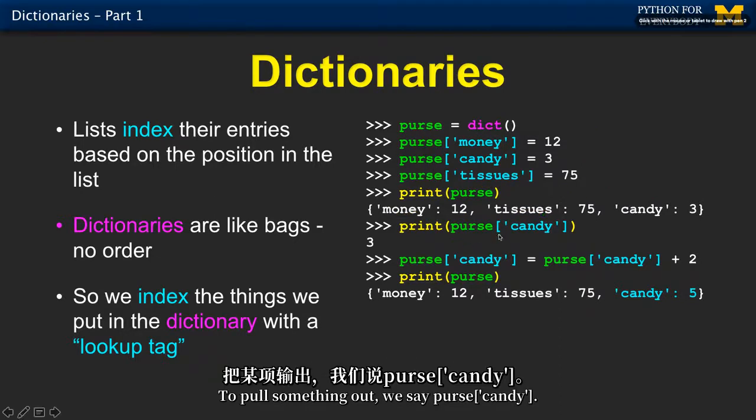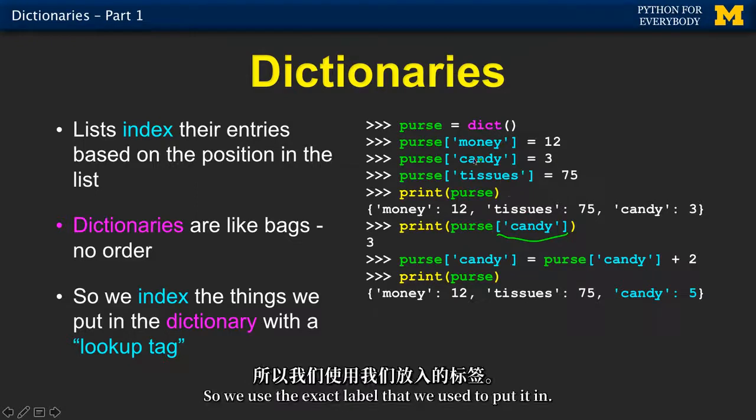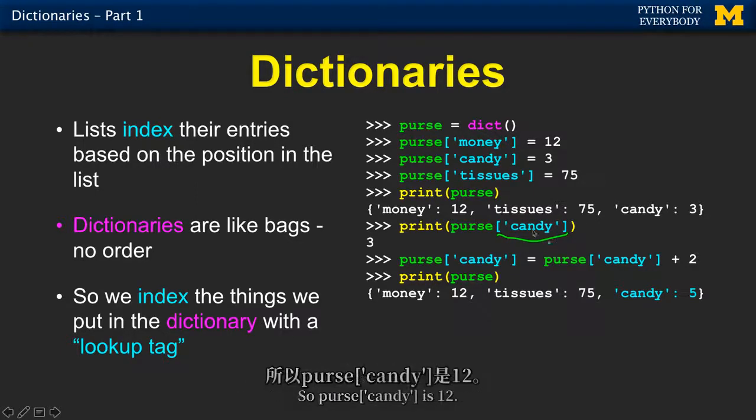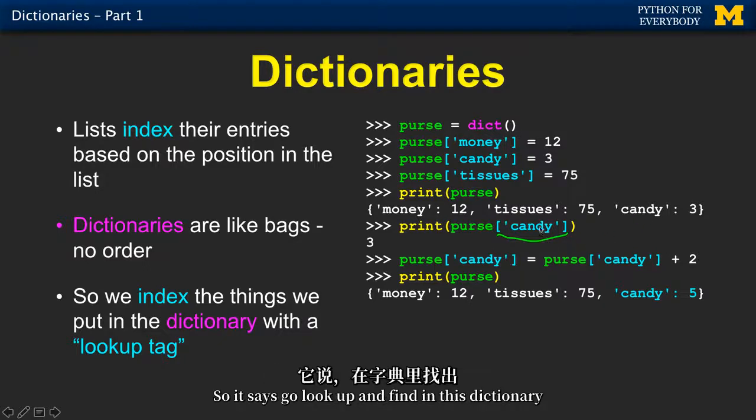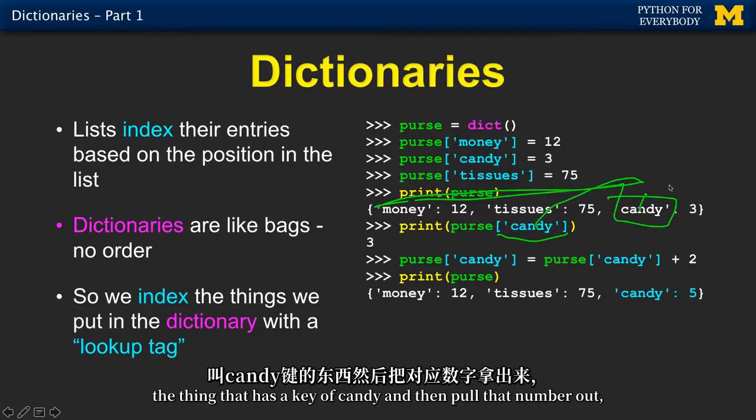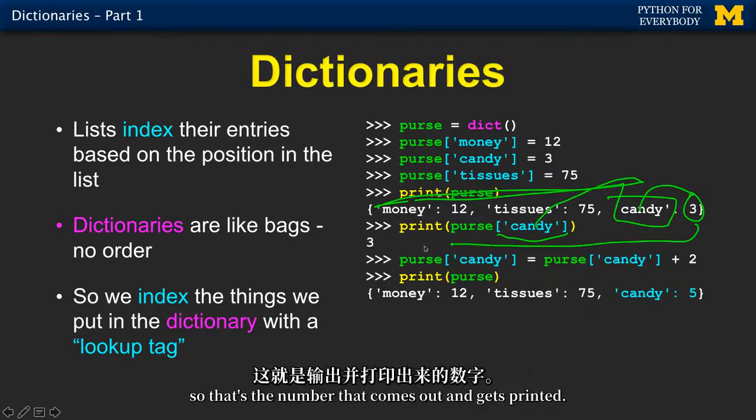To pull something out, we say purse sub candy. So we use the exact label that we use to put it in. We use that to pull it back out. So purse sub candy is 12. So it says, go look up and find in this dictionary, the thing that has a key of candy, and then pull that number out. So that's the number that comes out and gets printed.